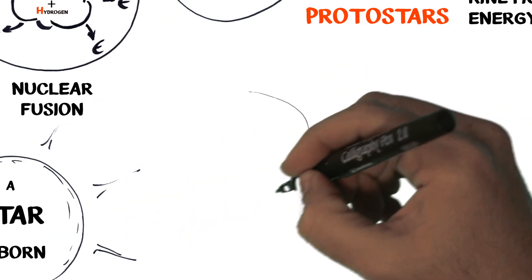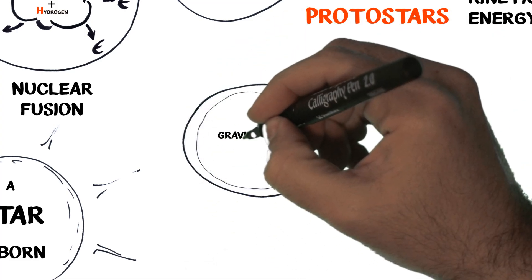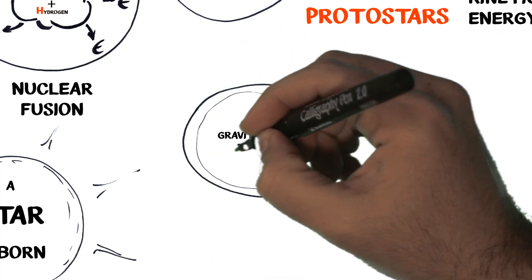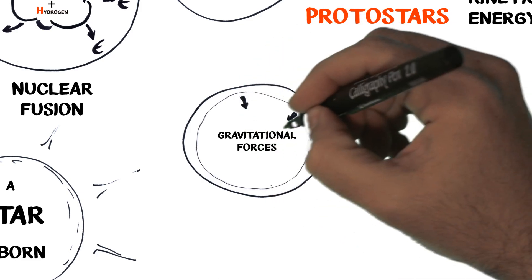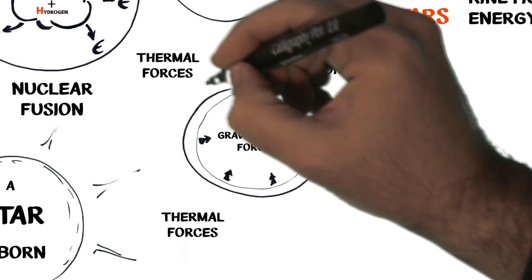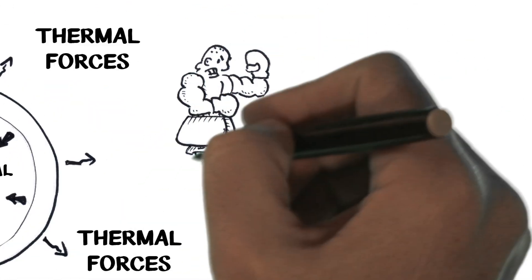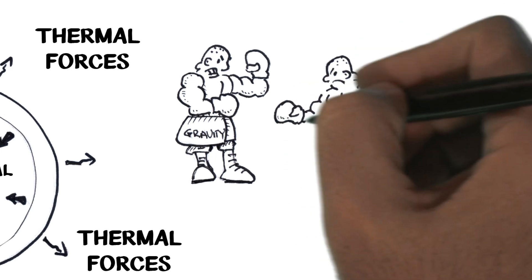In a star, there are two sets of battling forces. Gravitational forces that form the star and continue to try to collapse the star, driving nuclear fusion, and thermal forces trying to make the star expand. There is a dynamic equilibrium as these forces battle it out, and slowly, the star changes.